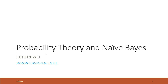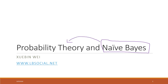This week we will talk about probability theory, which is an important concept in machine learning. We are also going to introduce a new machine learning model called Naive Bayes. Naive Bayes has been very successful in classifying text messages — for example, predicting whether an email is spam or not. Naive Bayes is highly based on probability theory.